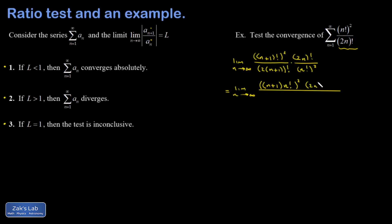I'm leaving my 2n! alone. And then in the denominator of that first half, I'm going to distribute the 2 and I end up with (2n+2)!. And then I have an (n!)². And I can clean some things up.